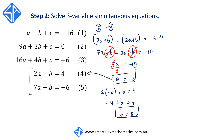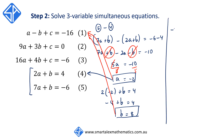Now we substitute a equals negative 2 and b equals 8 into equation 1 to solve for c. We get minus 2 minus 8 plus c is equal to minus 16, so minus 10 plus c equals minus 16, giving c is equal to negative 6.